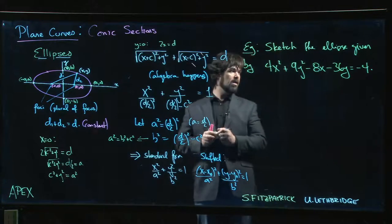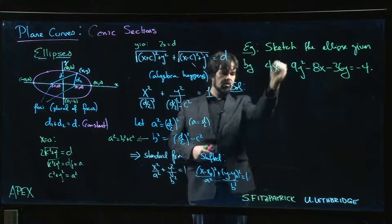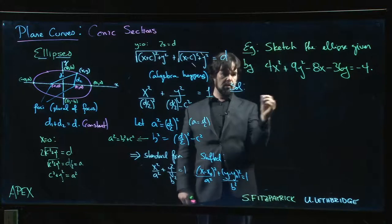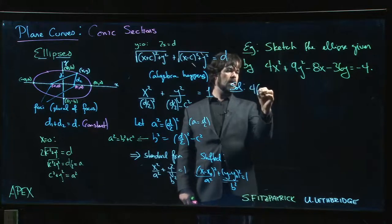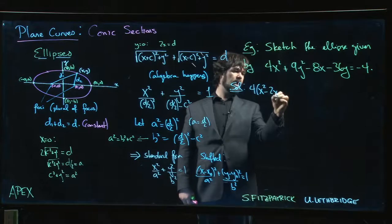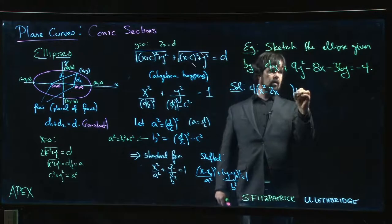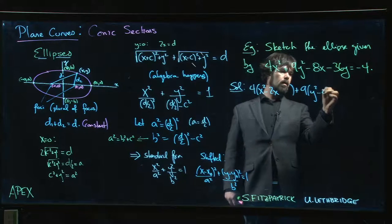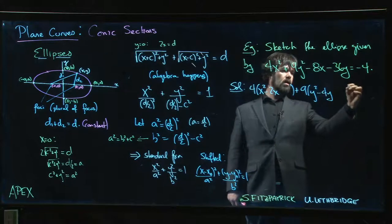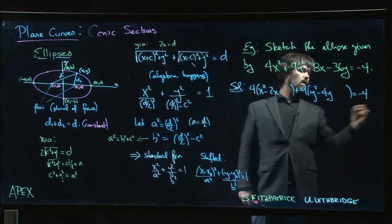So if we want to go the other way, of course the first thing we've got to do is we've got to complete the square in both variables. Okay, so we have 4 times x squared minus 2x, we're gonna leave room for another term there, and then we've got 9 times y squared minus 4y, leave room, okay, equals minus 4.